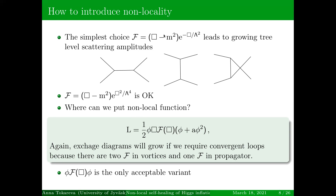Let me discuss how to introduce non-locality to heal a non-renormalizable scalar field theory. You can choose, for example, the simplest option — the exponent of minus box — which leads to convergent loops, but unfortunately also leads to growing tree-level diagrams, meaning you go very fast into the strong coupling region. So in our work we used the function with exponent of box squared, where all tree-level scattering amplitudes are at least suppressed.